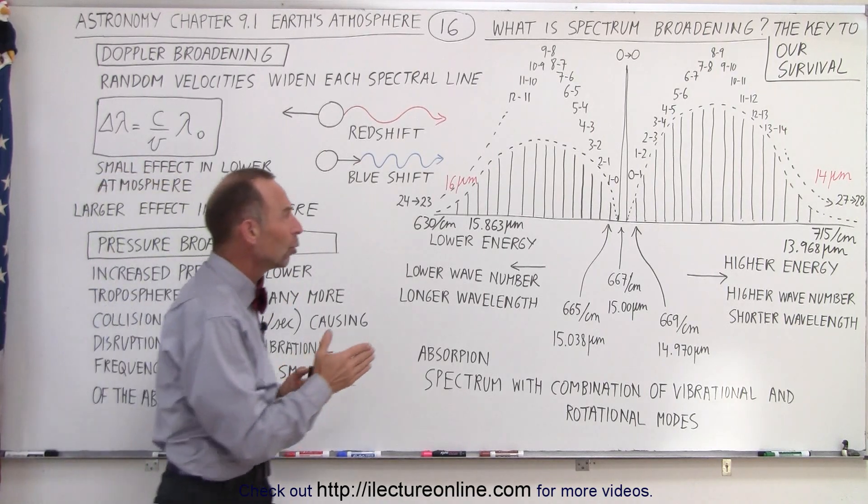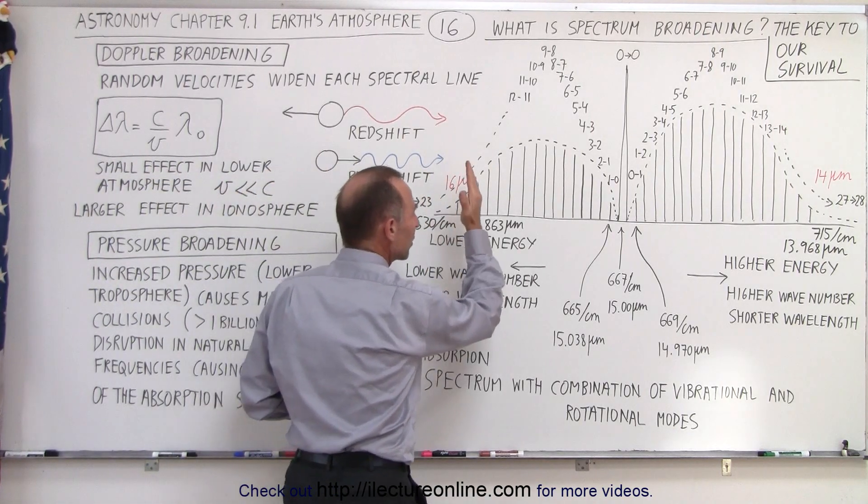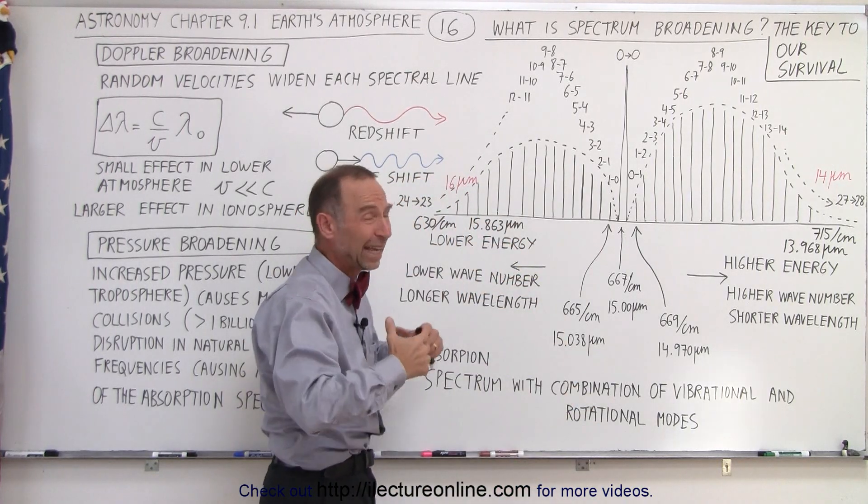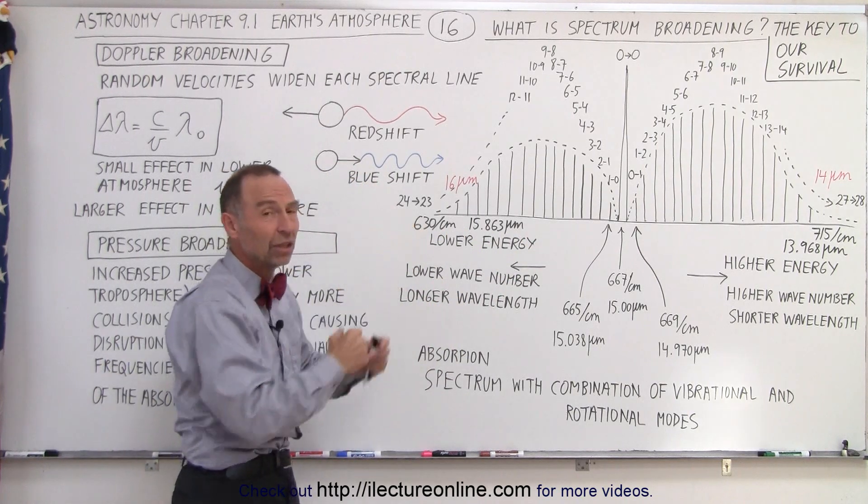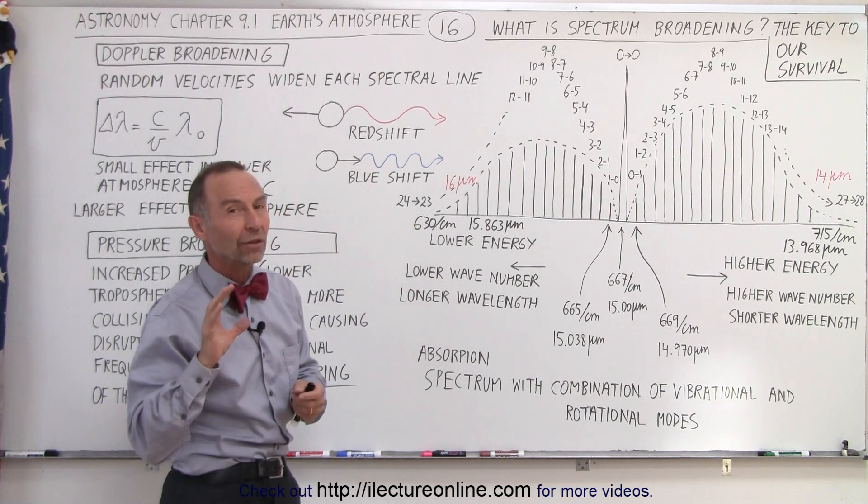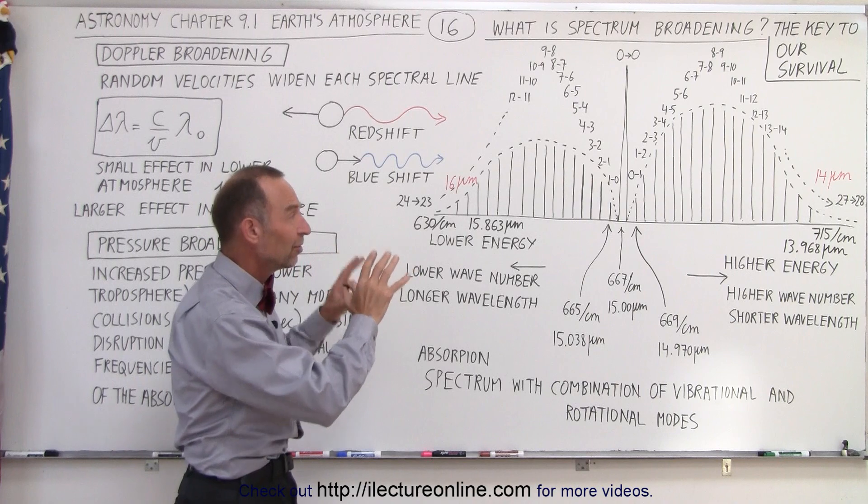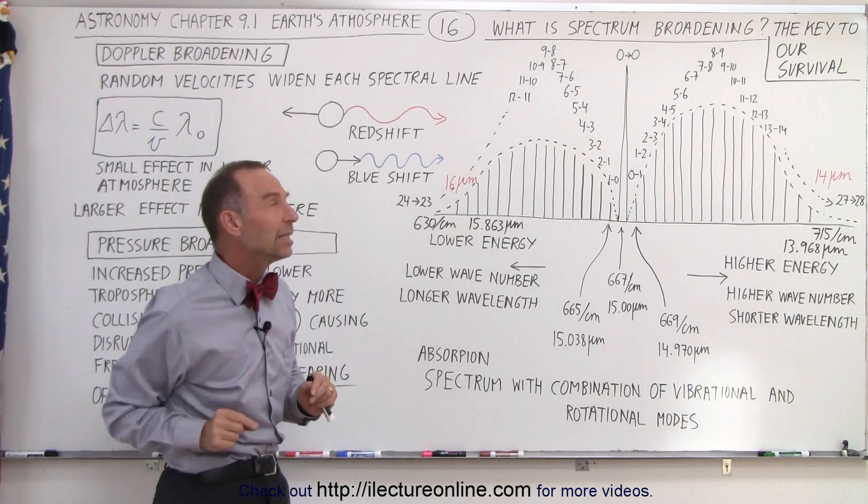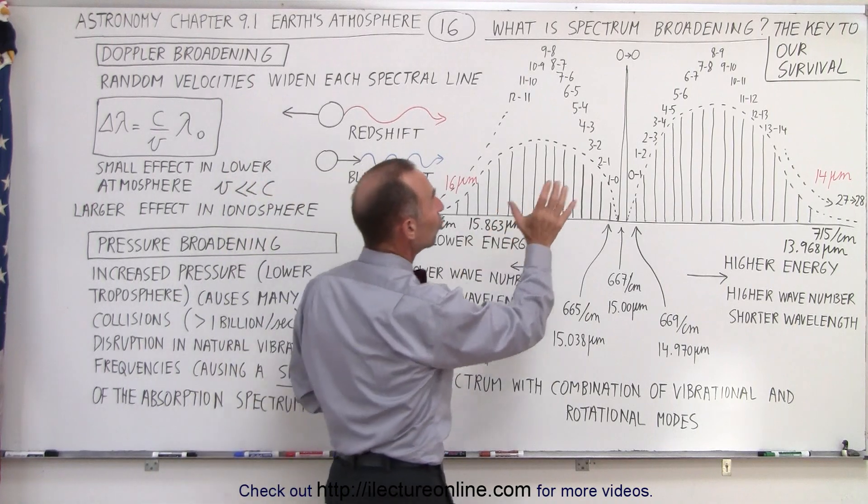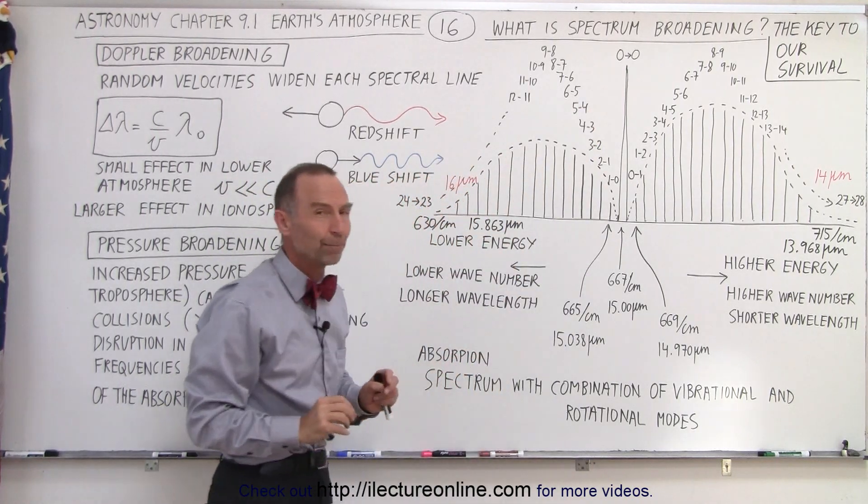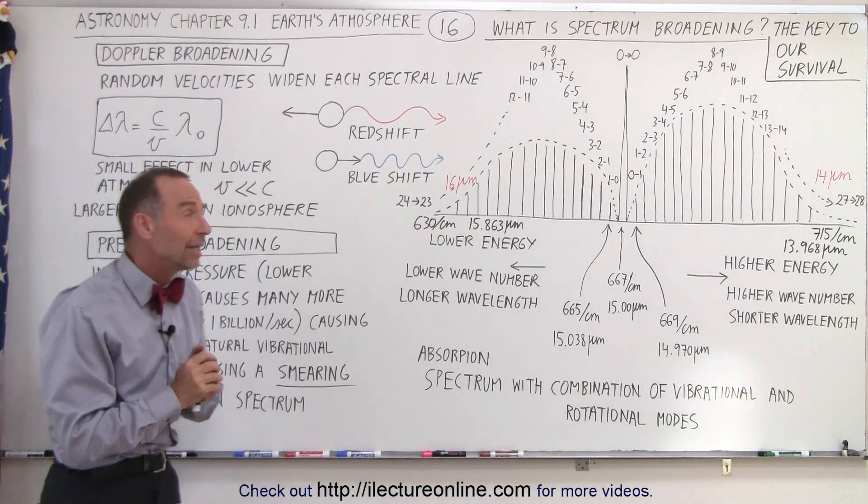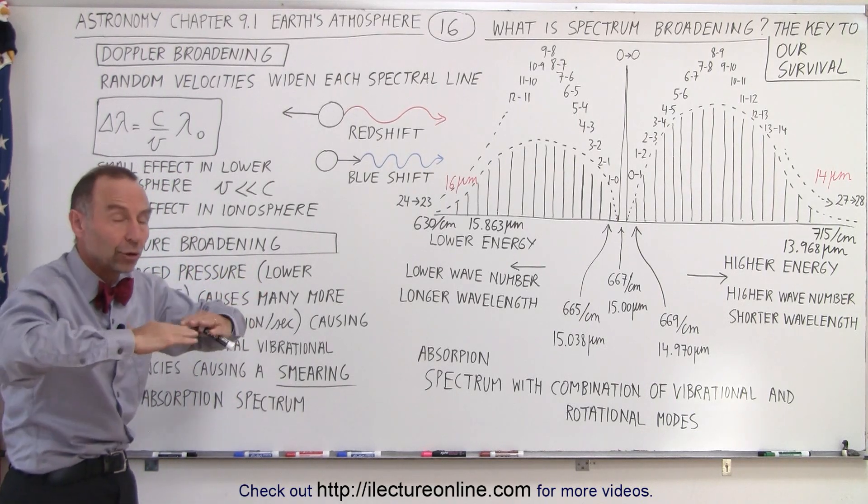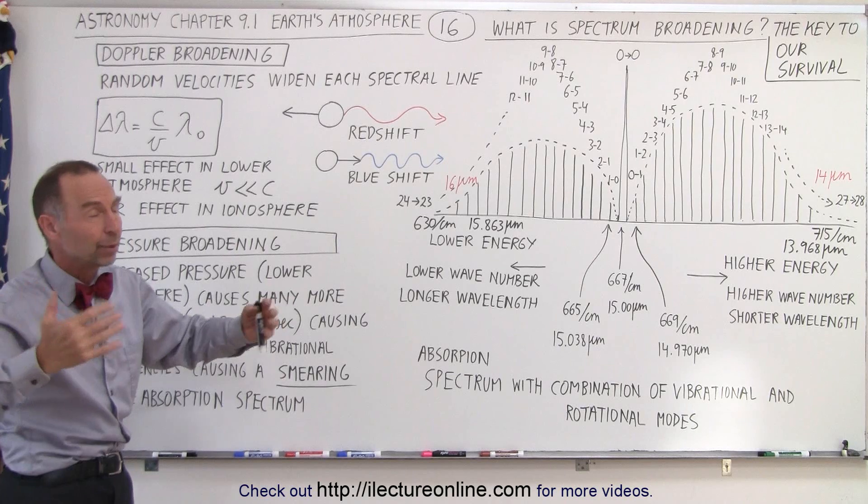But even then, there would only be very selected frequencies of radiation coming from the earth's surface that would be able to be absorbed, and the earth would be very, very cold, even with this structure like that. But what is so nice about what happens in addition to that, because without this, this couldn't happen, but one more thing needs to happen, and that thing is called spectrum broadening. There's two things that happen in the atmosphere that allow many more frequencies to be absorbed so that the earth can be a lot warmer comfortably the way it is today.